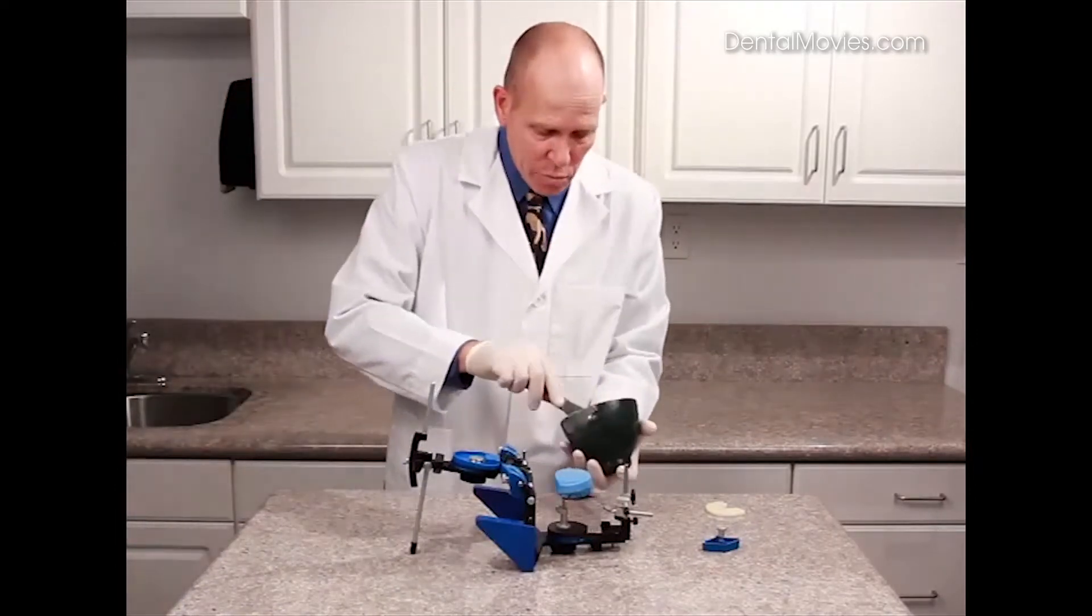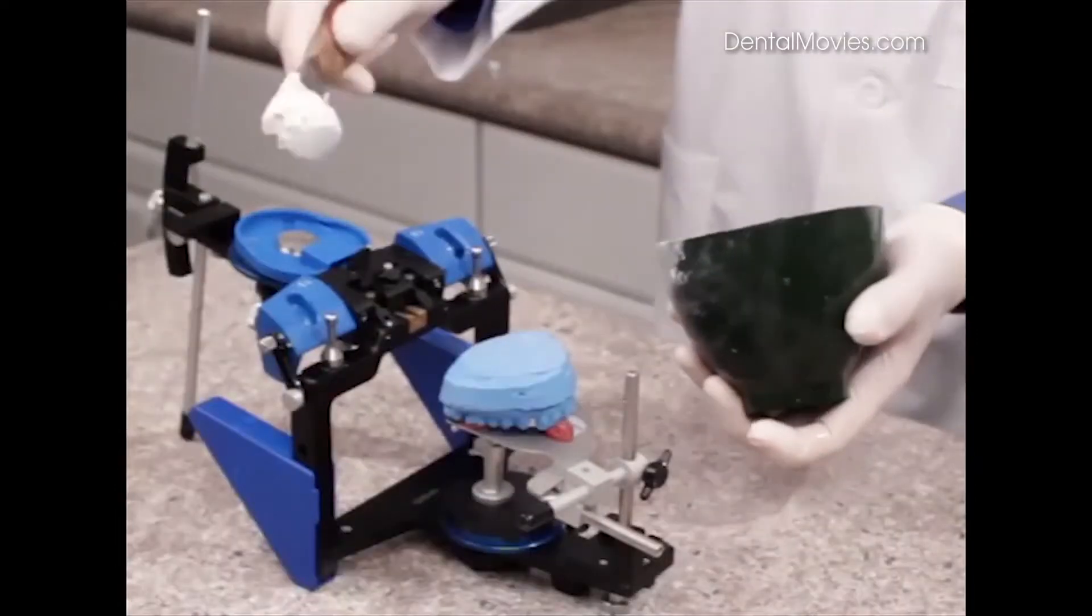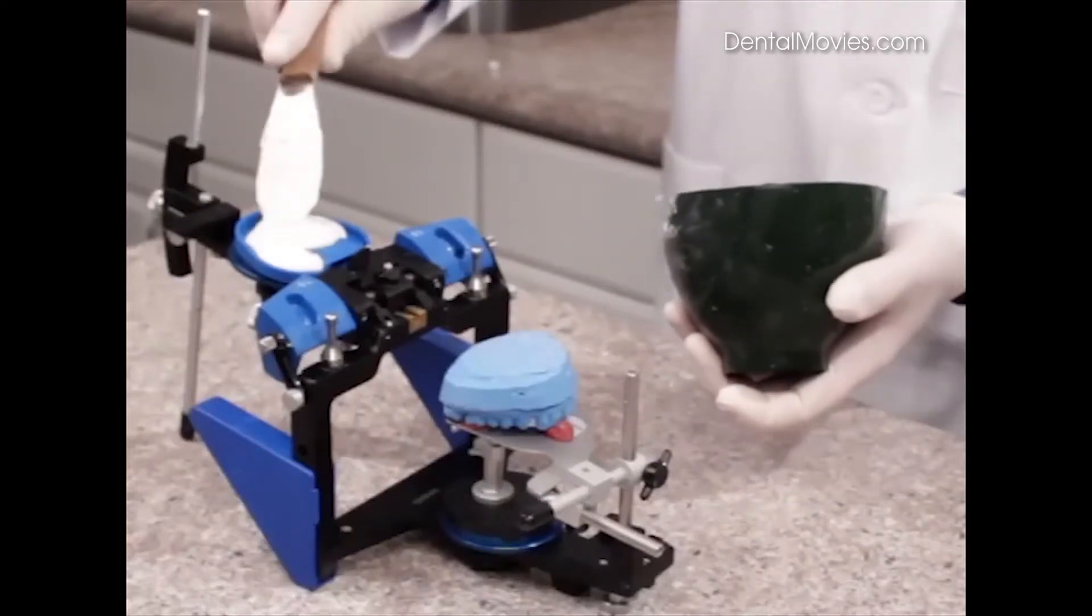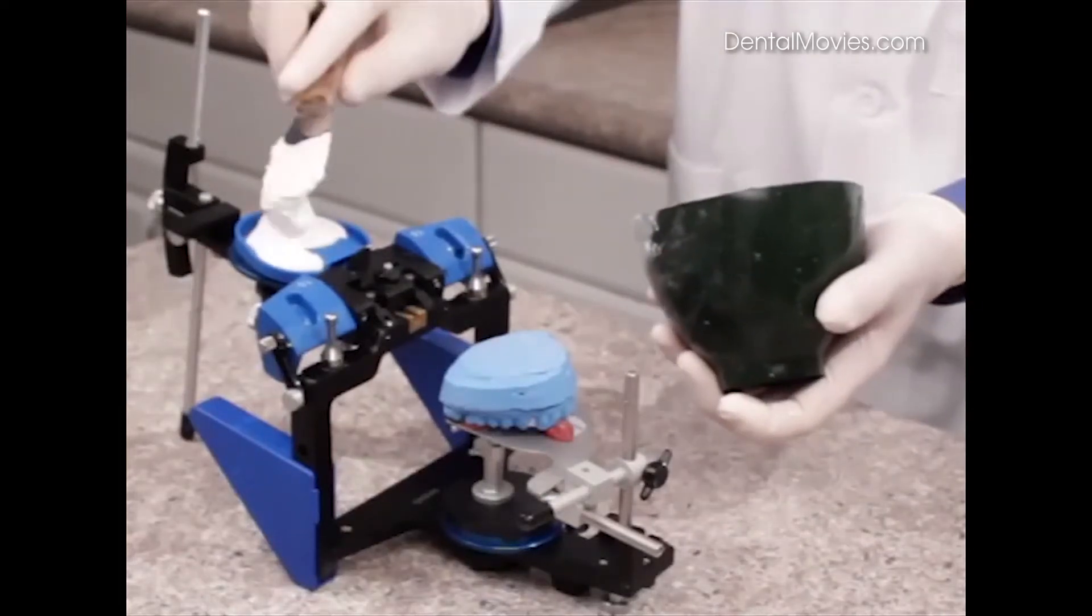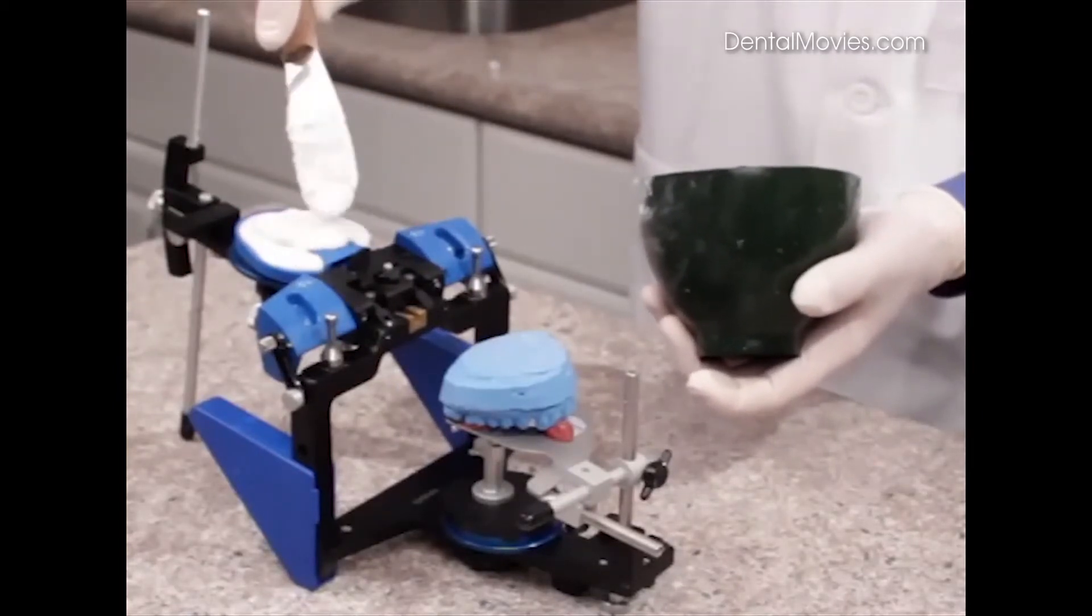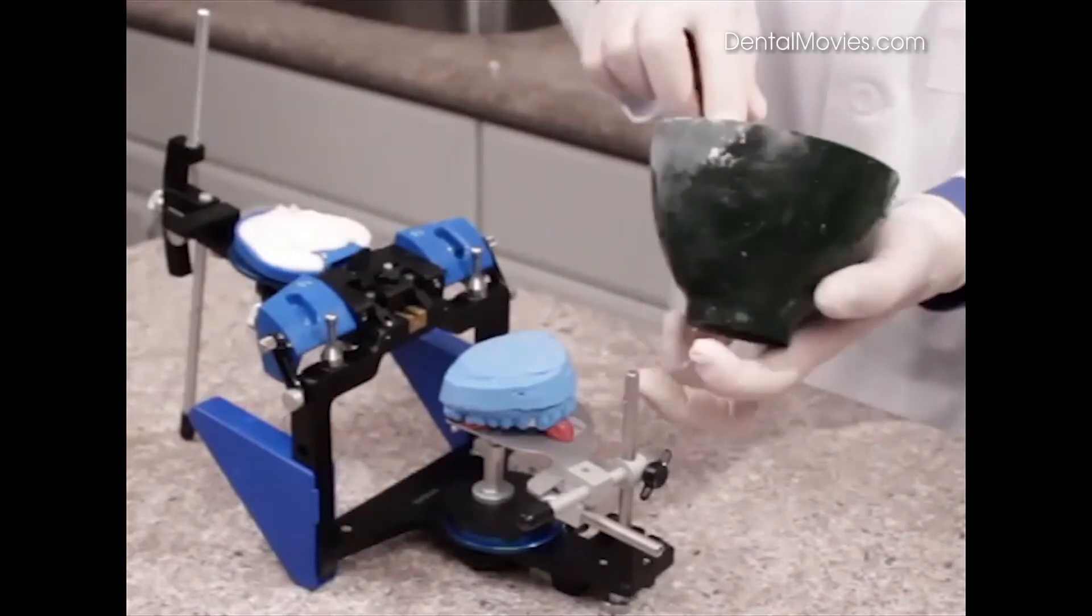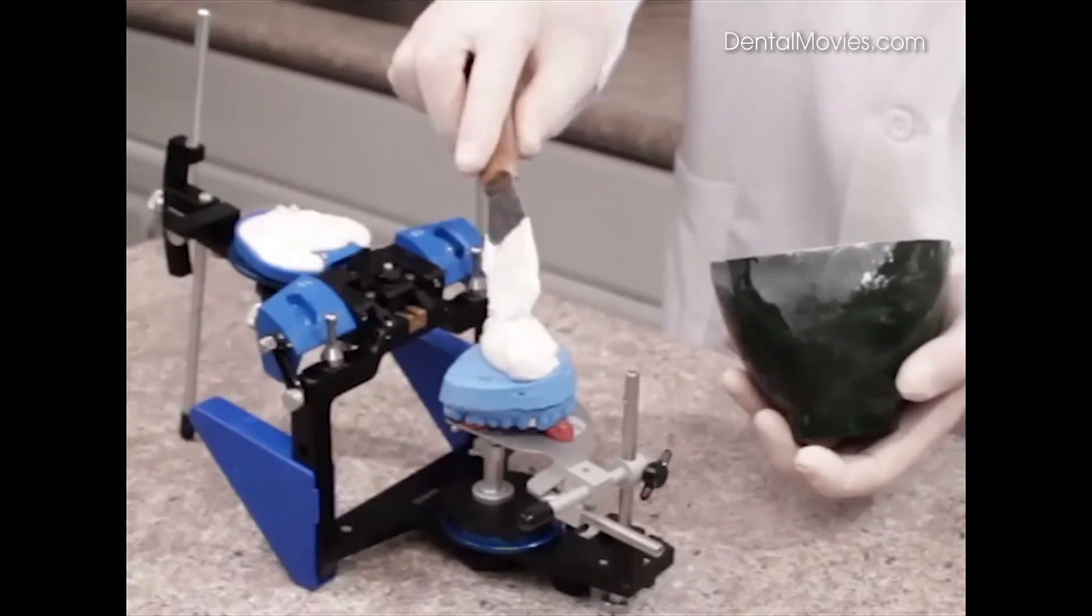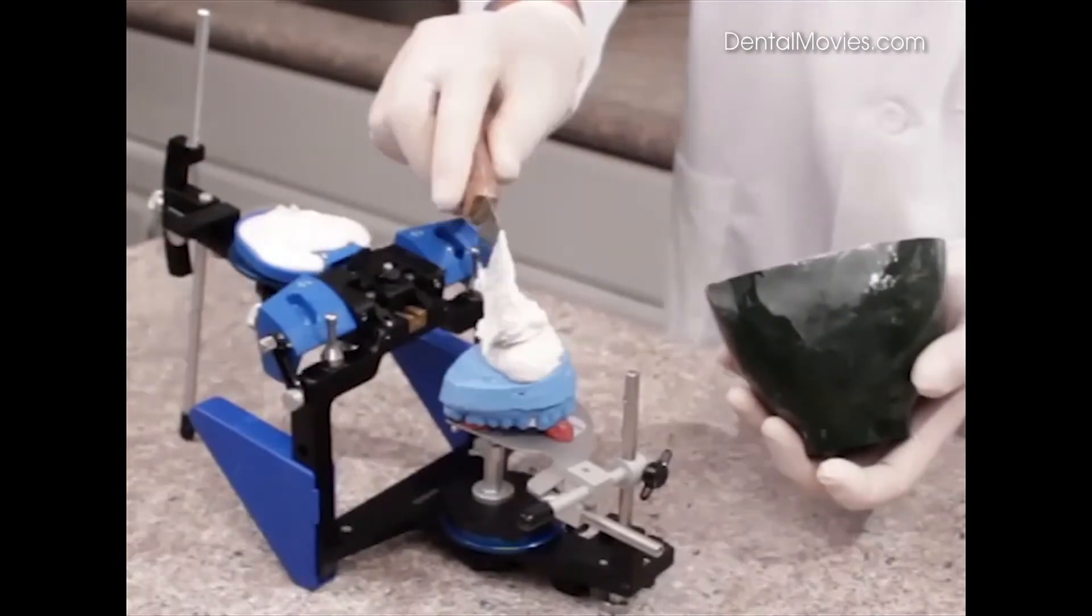Now we're going to mix plaster, and we'll add some plaster first to the mounting plate, make sure we get it around the center retention lug really well. We also want to fill that mounting plate up because we also have some retention tabs along the lateral edges of the plate. So we'll fill that plate up real nice like that, and then we'll add a little bit of plaster here to the model so we can make a connection to the mounting plate.